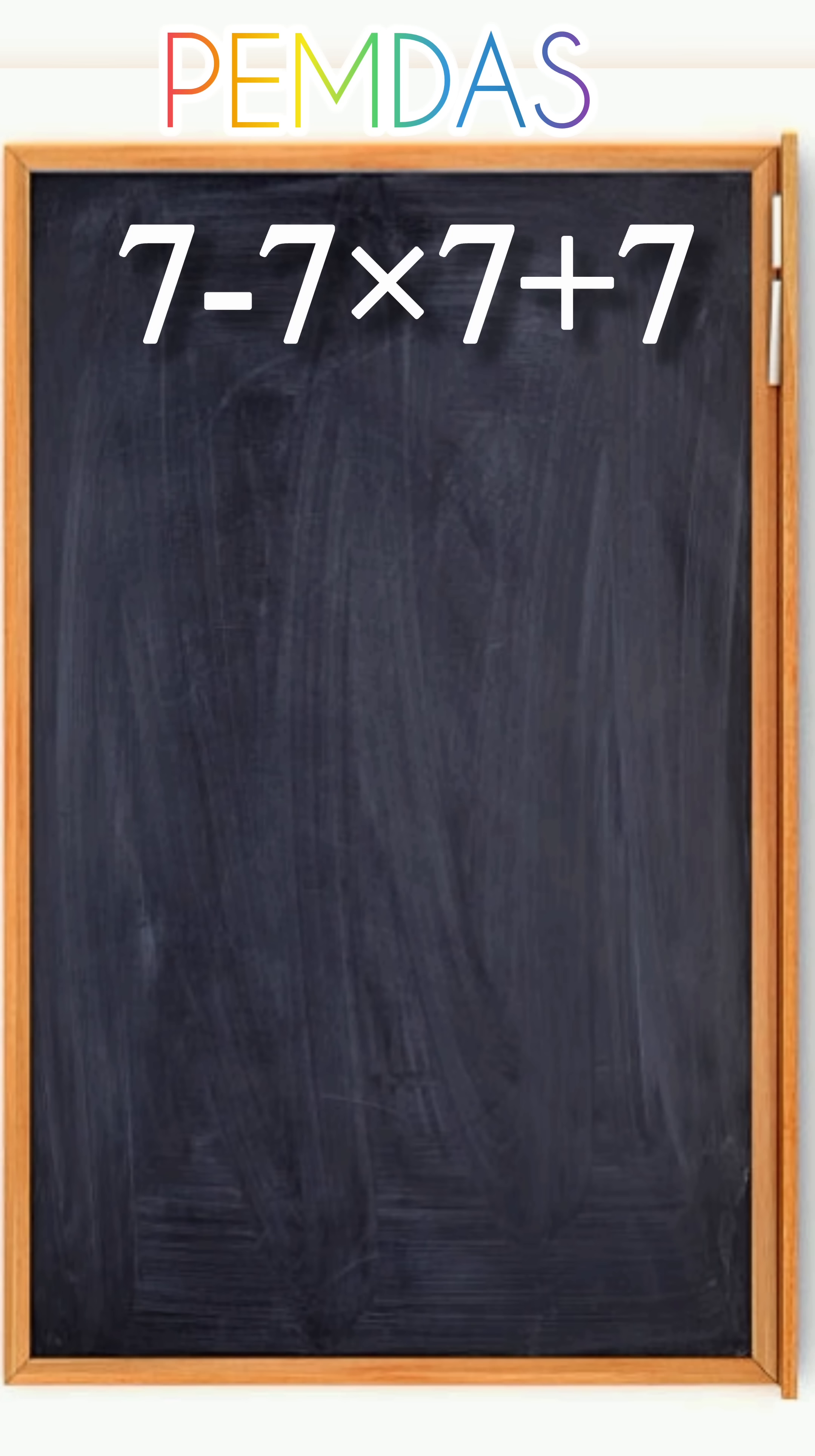Now let's solve it properly. In the expression 7 minus 7 multiply 7 plus 7, there are no parentheses and no exponents, so we start with multiplication. 7 multiply 7 equals 49. Now the problem becomes 7 minus 49 plus 7.